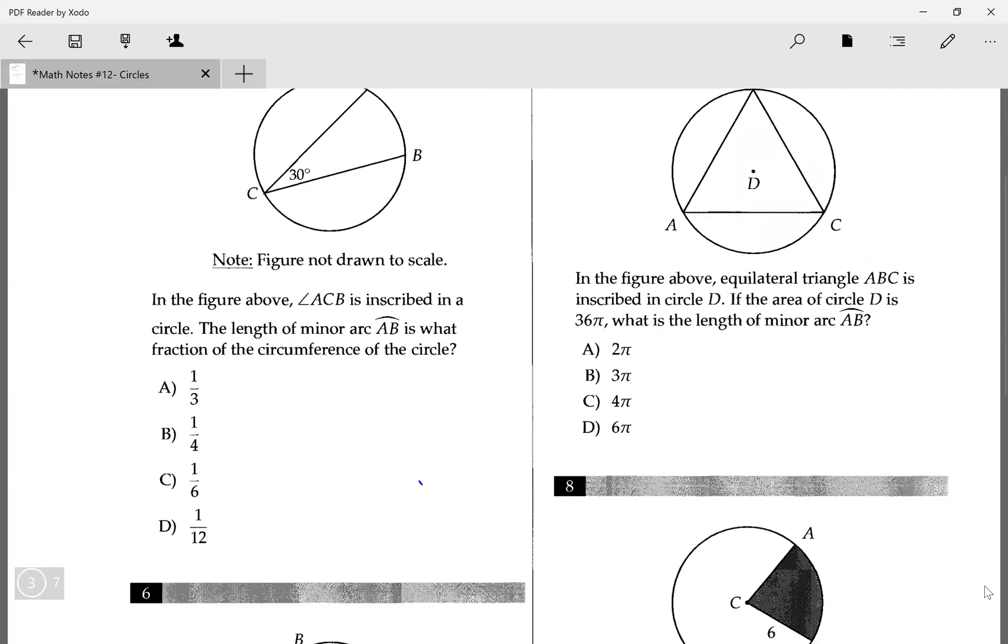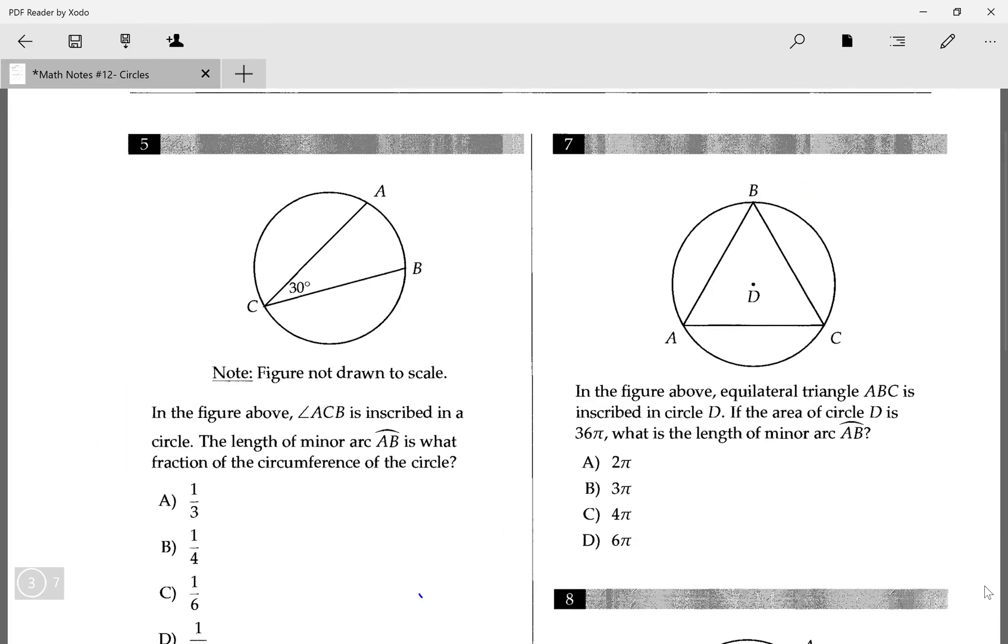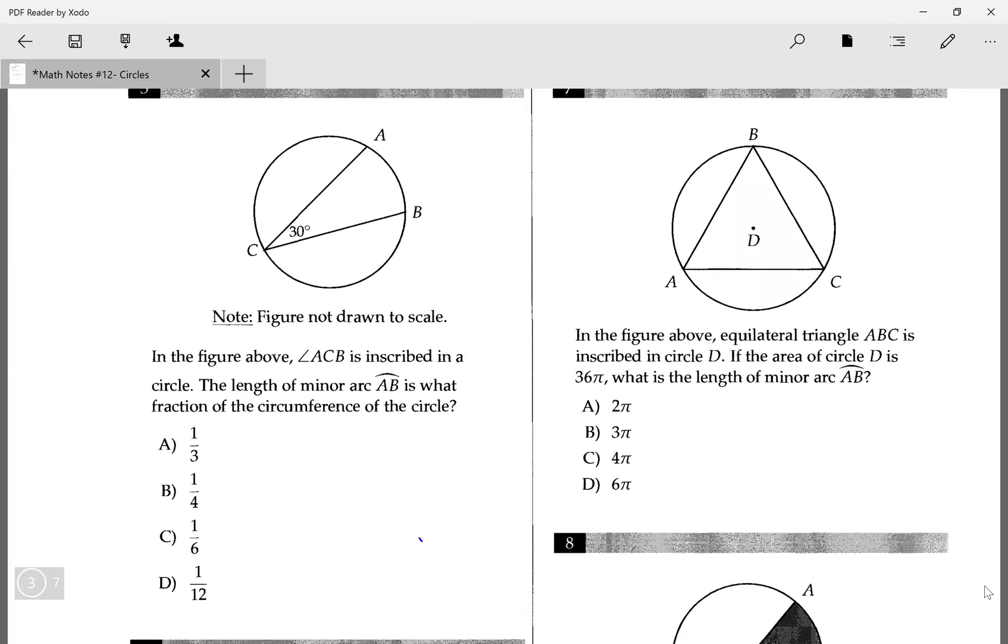Okay, so I'm going to go over number 5. In the figure above, ACB is inscribed in a circle. The length of minor arc AB is what fraction of the circumference of the circle? So if this is 30 degrees, then that means if it was from a central point, like a central angle, it would have been 60 degrees, right?